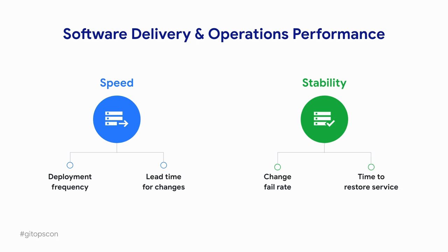These four metrics can be applied to any kind of software delivery, whether it's web, mobile, firmware, or otherwise. Using these metrics, we can actually bucket teams into specific categories: low, medium, high, and elite software delivery performing teams. But these are just trailing indicators of software delivery performance, and that's where the leading indicators come in.